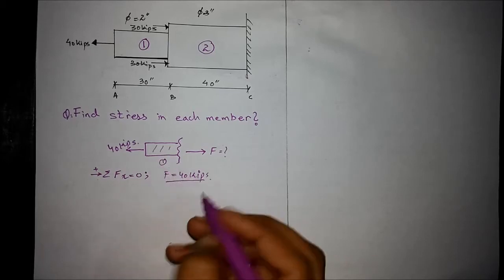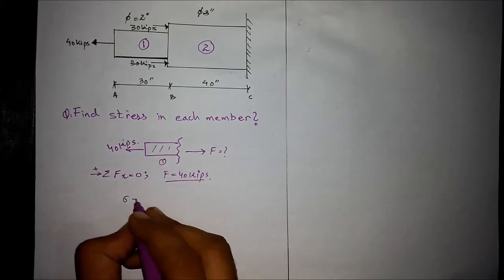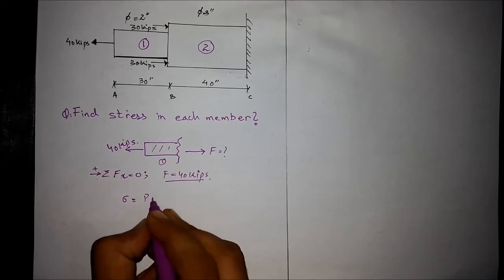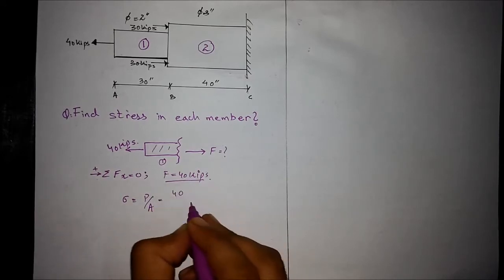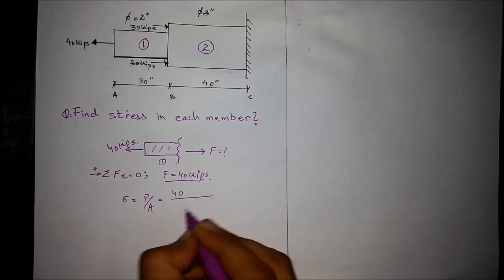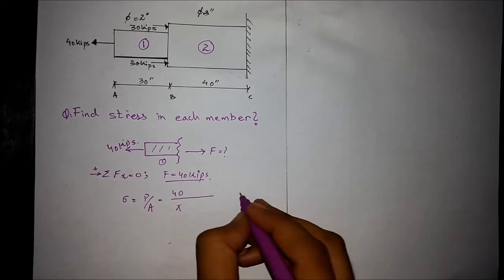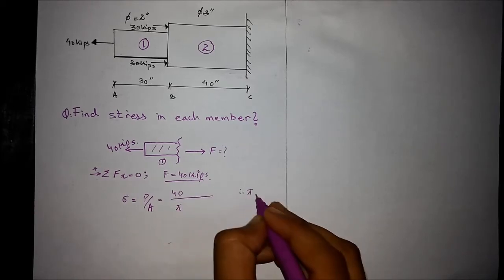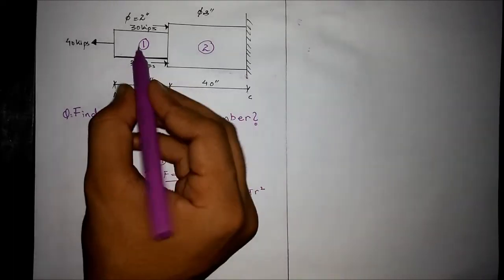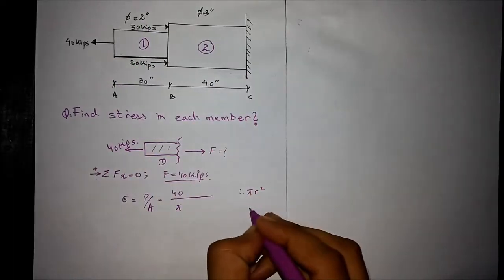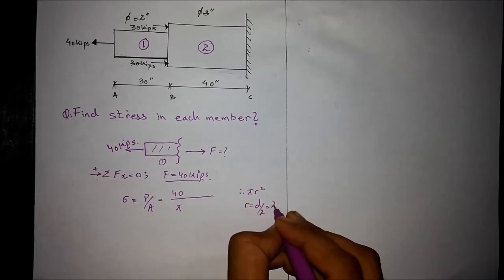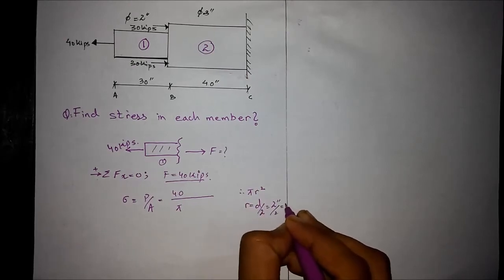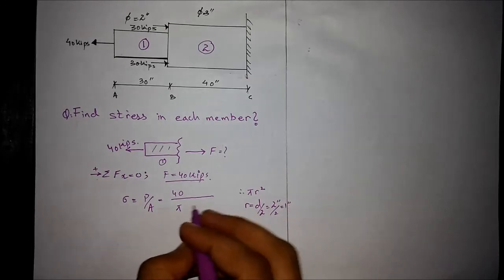For member number 1, the stress is equal to force over area. We know that the force comes out to be 40 kips. The area is π r squared. The radius for this member is 1 inch, since the diameter is 2 inches and the radius is 1 inch.